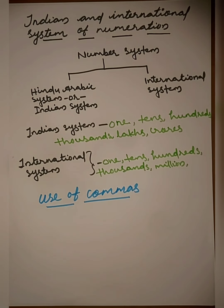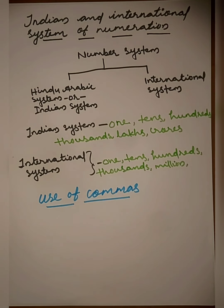Commas help us in reading and writing large numbers. In the Indian system of numeration, we use the first comma after the hundreds place — that means after three digits from the right. The second comma comes after two more digits, meaning five digits from the right. The third comma comes after another two digits.